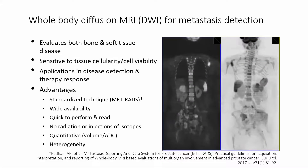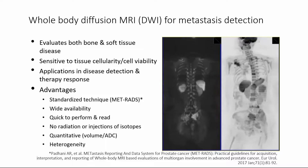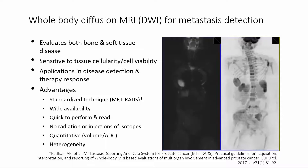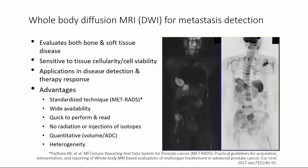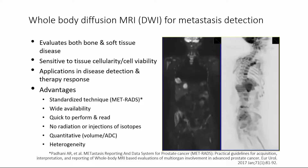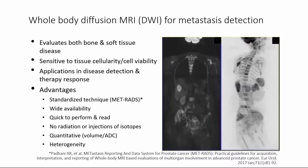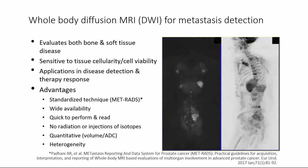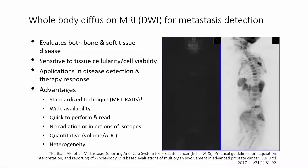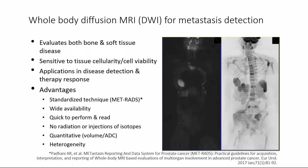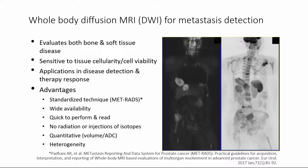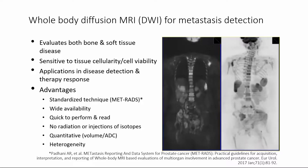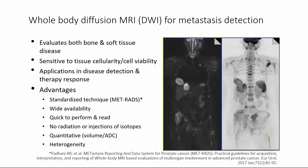The whole body MRI experiment looks at both bone and soft tissue disease. The diffusion experiment is sensitive to cellularity and therefore to cellular viability, and has a number of applications: detection and response assessment. The advantages are that it's widely available — most scanners can do this — it's easy to perform, requires no radiation, and it's quantitative.